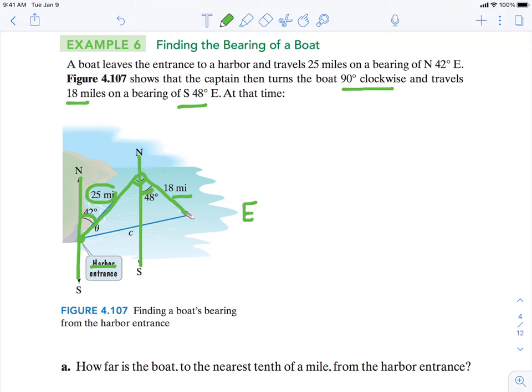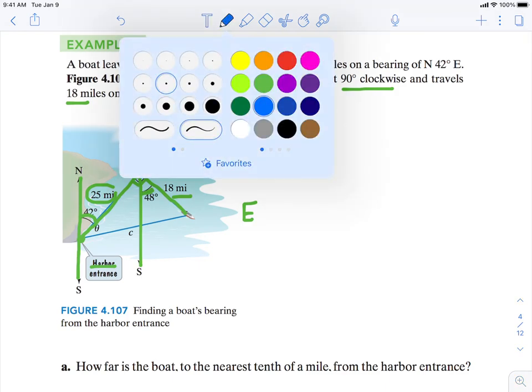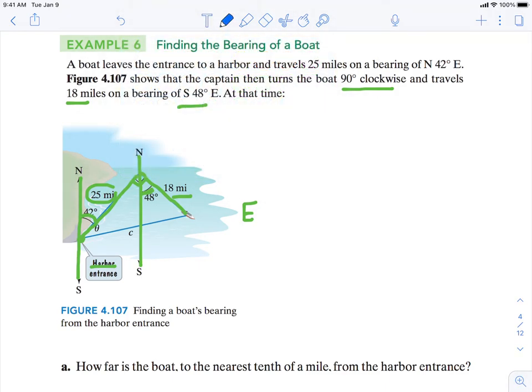Part A says, how far is the boat to the nearest tenth of a mile from the harbor? So we want to find out here is the boat. What is this distance right here?